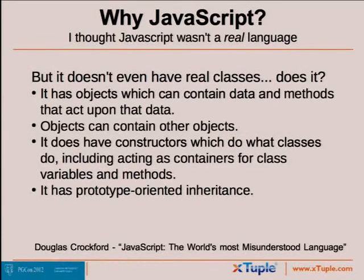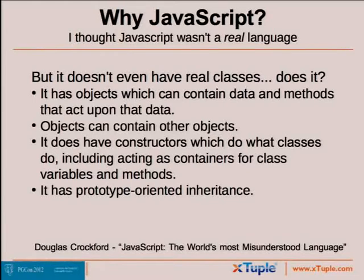One objection is: you're trying to build a rich domain, but JavaScript doesn't really have classes. I picked up these quotes from Douglas Crockford in his essay 'JavaScript: The World's Most Misunderstood Language.' Basically, it has the characteristics we need to build an object-oriented environment. It has objects with data and methods, they can contain other objects, it has constructors and prototype-oriented inheritance. Even though it doesn't have classes in the classic C++ definition, you can get the behaviors we need to build the domain we want to build.